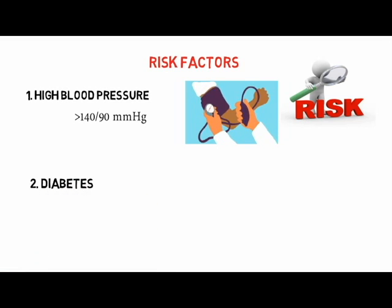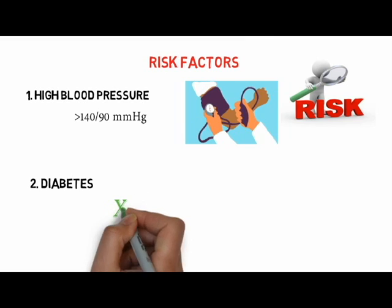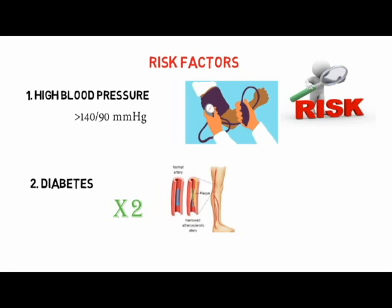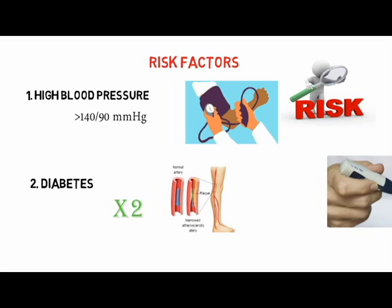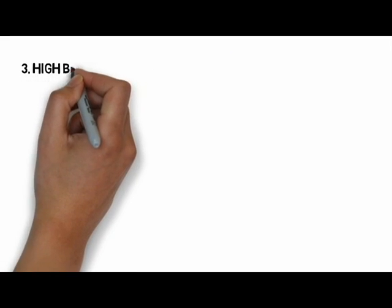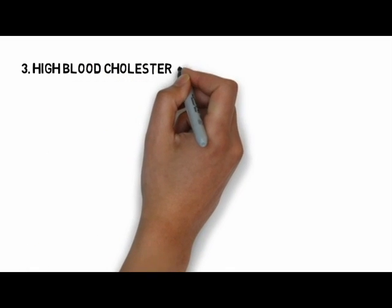Second, diabetes — a chronic condition in which the body is unable to utilize blood sugar. A person with diabetes is around twice as likely to have a stroke as someone of the same gender and age who doesn't have diabetes. This is because high blood sugar levels contribute to the development of atherosclerosis, that is narrowing of the arteries. It is very important that diabetes be kept under control.